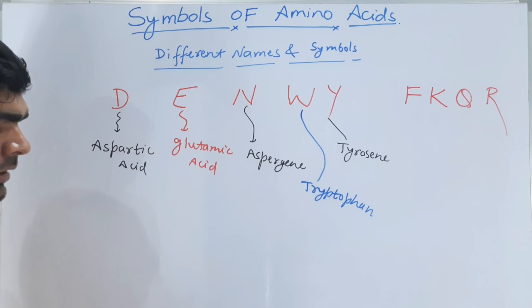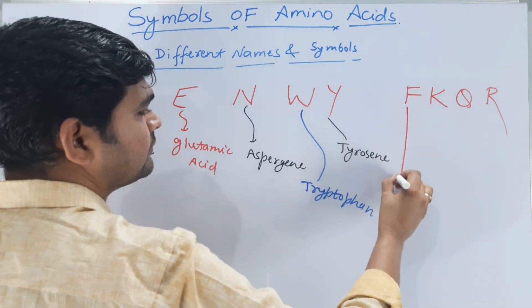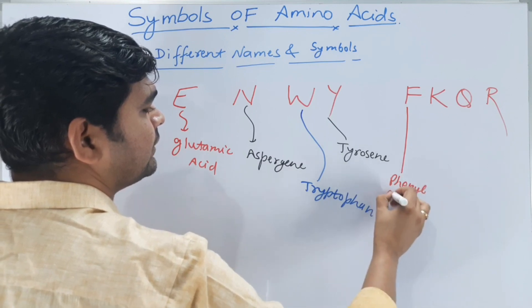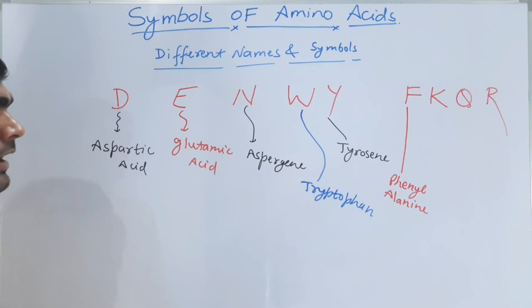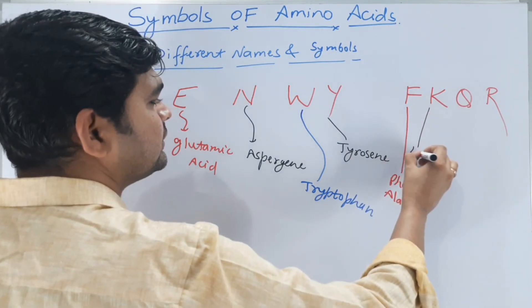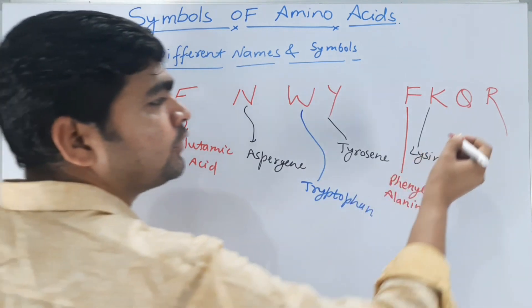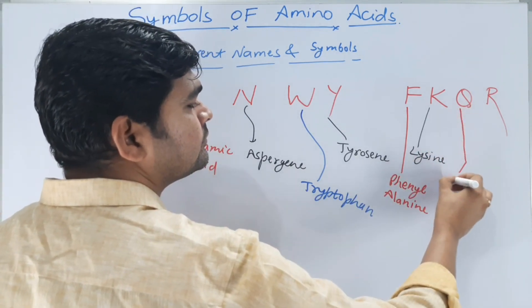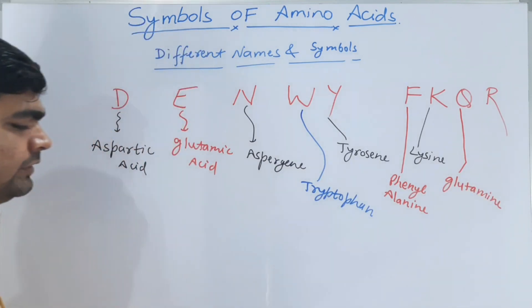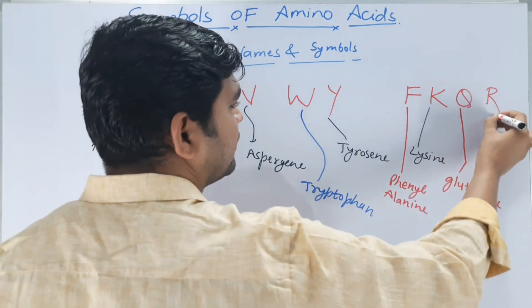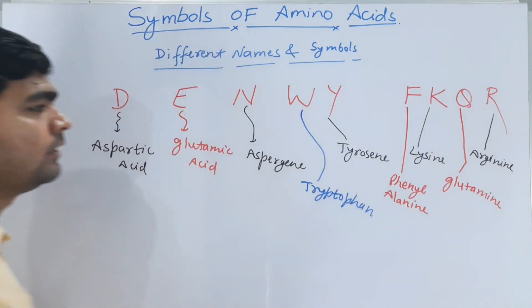Now it's time for Fakir: F is for phenylalanine. K is for lysine. Q is for glutamine. And R is for arginine.